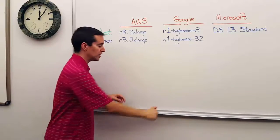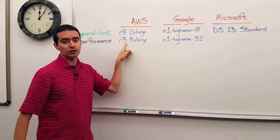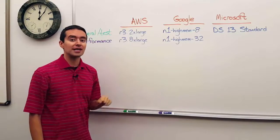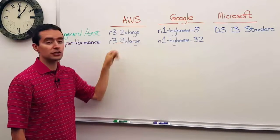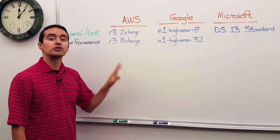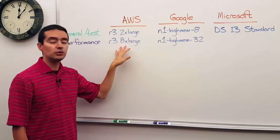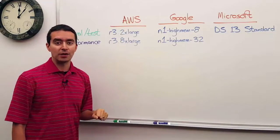Now, a couple of notes with those. First of all, with the R3 8XL, Amazon specifically calls out that there's more network bandwidth available to it than there is to the smaller instance type. So not only do you get better CPU and RAM, but you also get better network bandwidth.